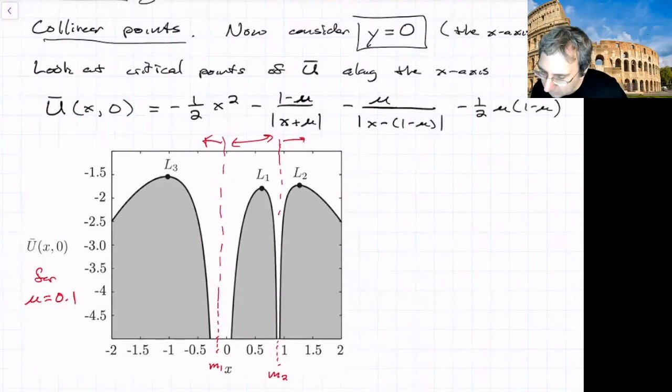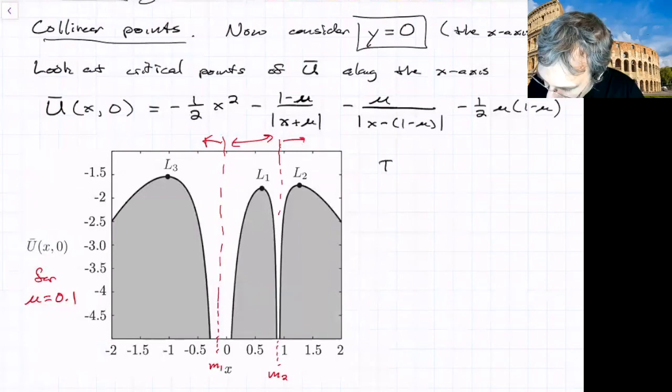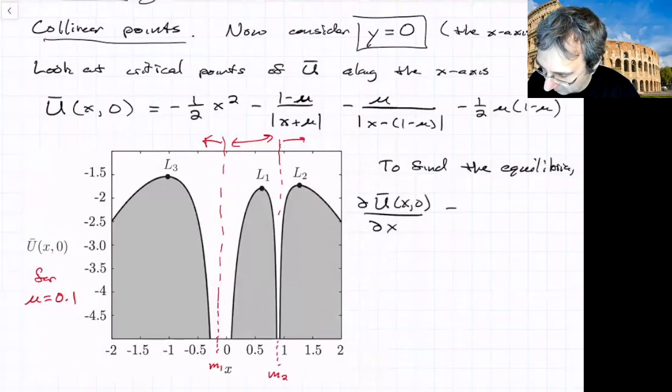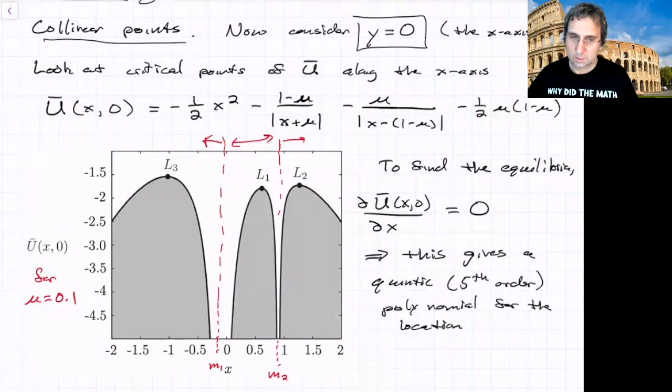Maybe we'll start with the one that includes L1, the one between m1 and m2. To find the equilibria, we look at partial U bar x 0 partial x and set it equal to 0. That'll give us critical points. That turns out to give us a quintic polynomial, a fifth order polynomial.